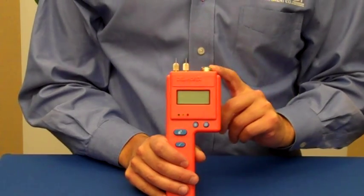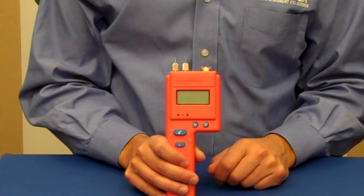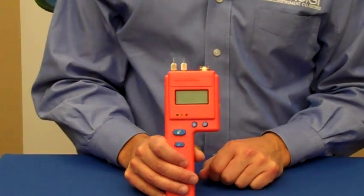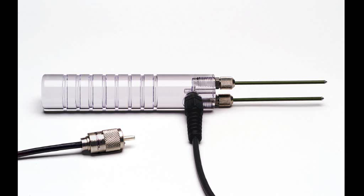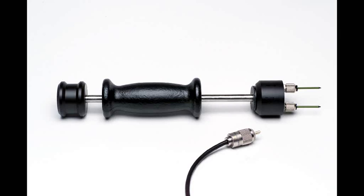The connector on the side accepts any Delmhorst electrode. The most popular electrodes are the 21E for measuring insulation behind the drywall and the 26ES for measuring hardwood floors and sub floors.